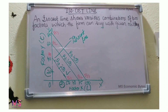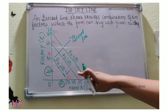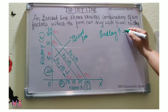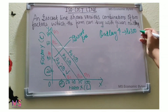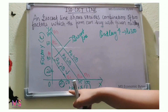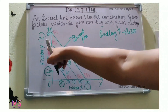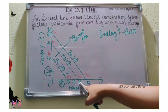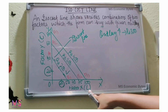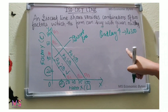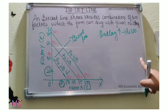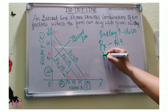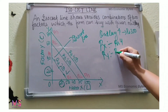Now suppose the outlay of the firm increases to ₹300 — earlier it was ₹200. The firm can now buy more of X or more of Y. The prices of X and Y per unit remain constant: price of X is ₹4 per unit and price of Y is ₹5 per unit. So the firm can buy 75 units of Factor X.